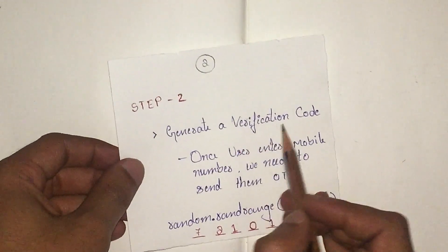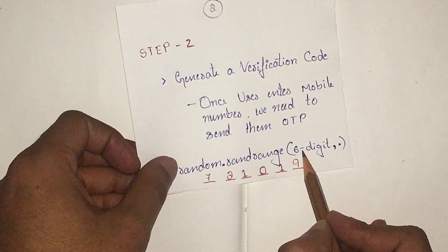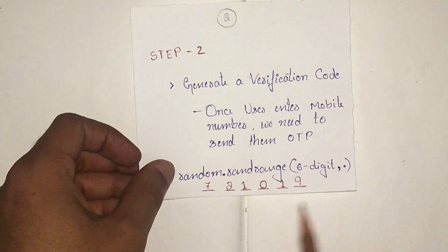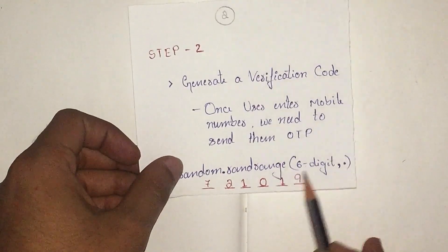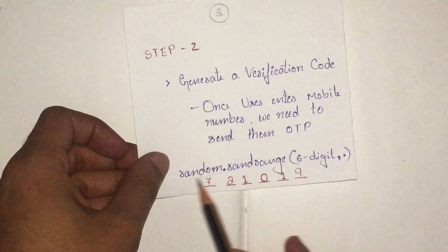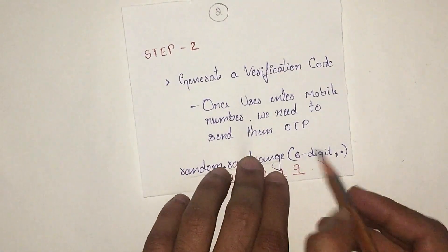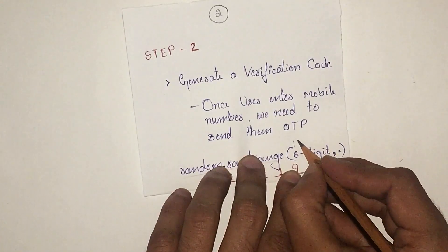The verification code has to be six digits or nine digits, however it is convenient to you. We need to generate six digits using the random function. randrange is a function that takes two parameters.